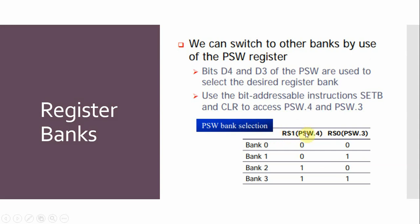These two bits are the register bank selector flags, RS1 and RS0. To select bank 0, both RS1 and RS0 are 0 (00). To select bank 1, RS0 is 1 and RS1 is 0. To select bank 2, RS0 is 0 and RS1 is 1. These are also referred to as PSW bit 4 and PSW bit 3.